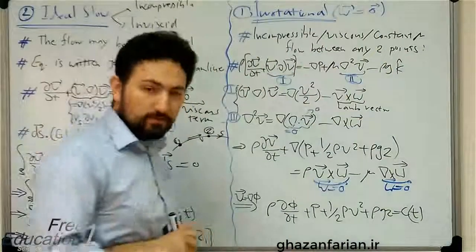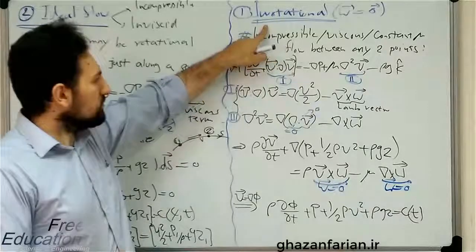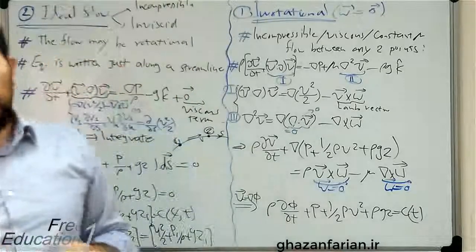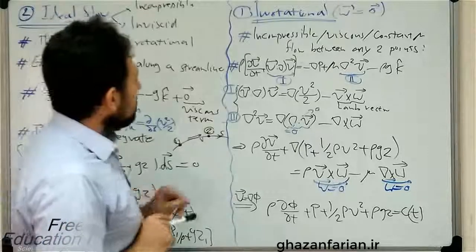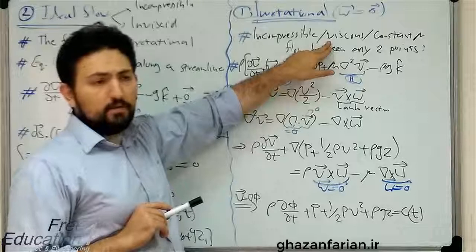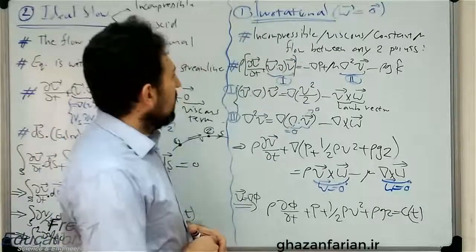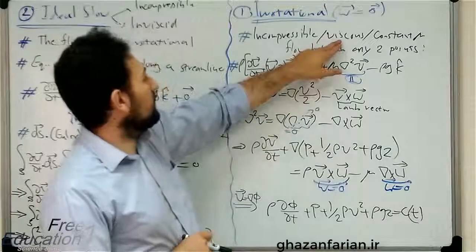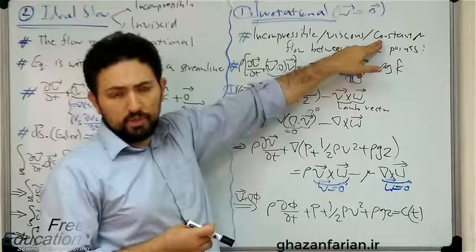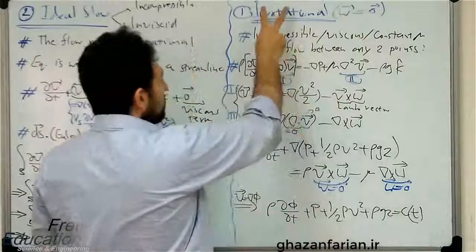Let's start from the first version of Bernoulli's equation, which can be used for irrotational flows. Irrotationality is related to the vorticity vector — when the flow is irrotational, the curl of velocity or the vorticity vector is zero, meaning the velocity field is curl-free. The flow can also be viscous. Bernoulli's equation can be written for viscous, irrotational, and incompressible flows where the dynamic viscosity is constant.